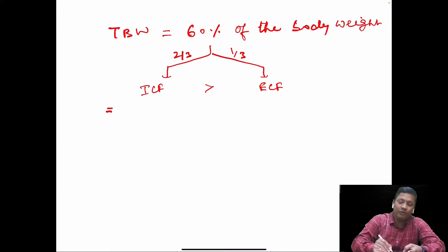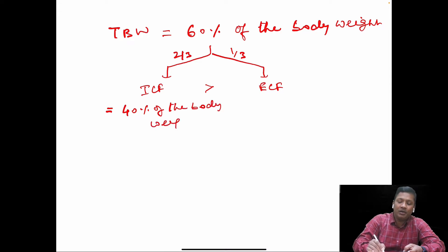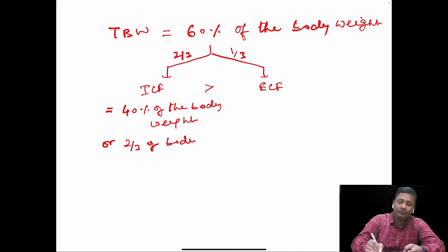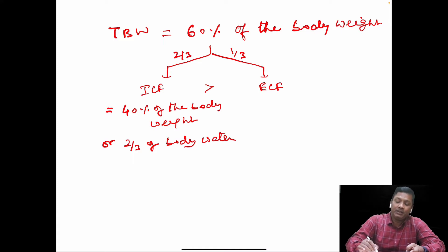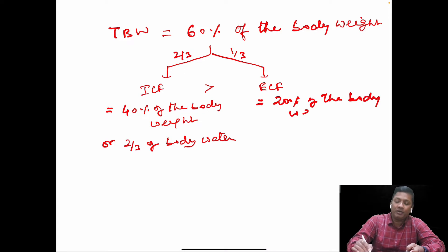The intracellular fluid is two-thirds of the body water, so ICF equals 40% of the body weight, or two-thirds of the total body water. The extracellular fluid equals 20% of the body weight, or one-third of the total body water.